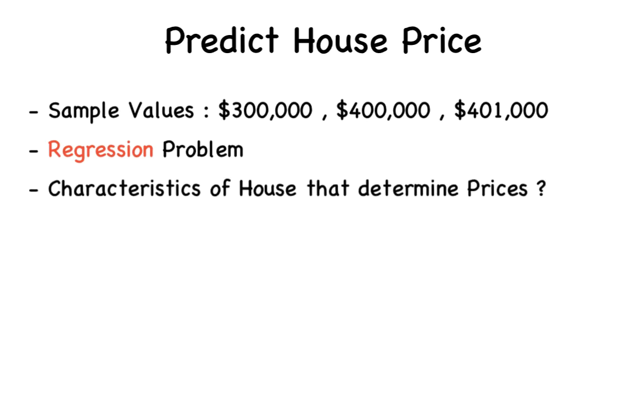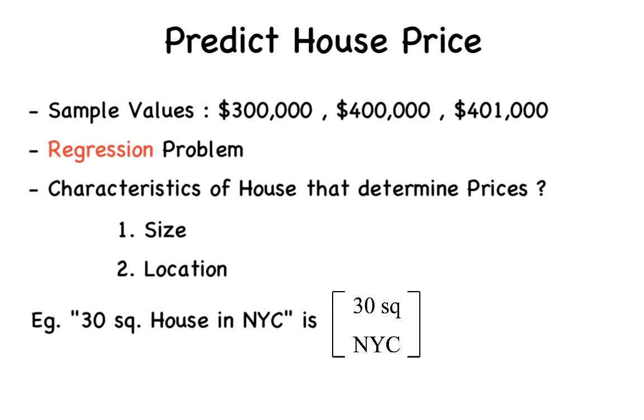Now, what characteristics can you think of that may determine the price of a house? The first thing that comes to mind would probably be the size of the house, and the second would be location. Based on these features, we'd represent a 30 square house in New York City as a two-dimensional vector: 30 square, New York City.